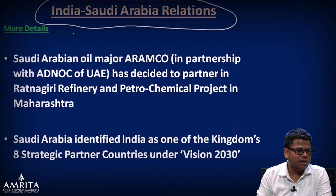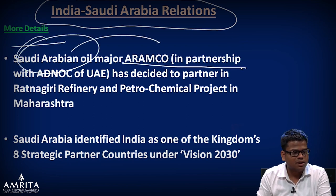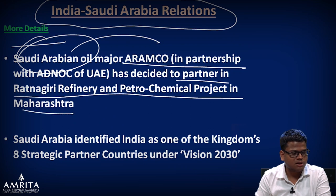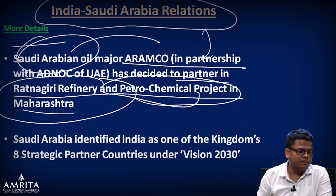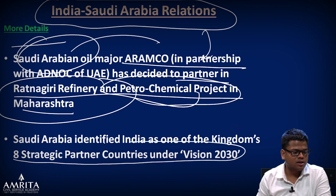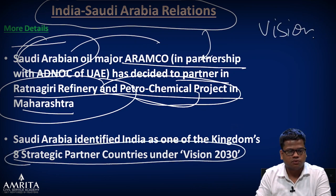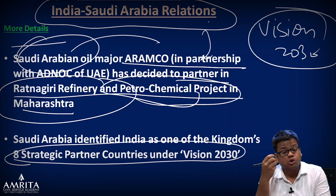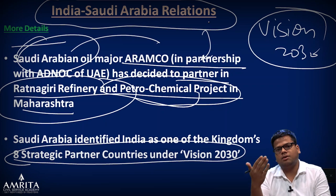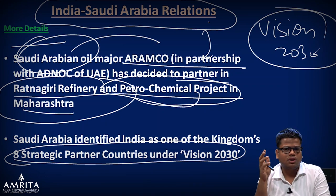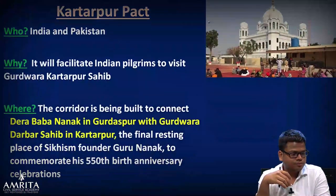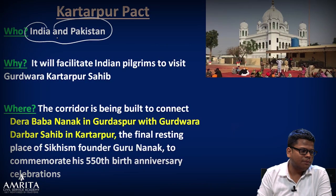Saudi Arabia's Aramco decided to partner in the Ratnagiri Refinery and Petrochemical Project in Maharashtra. Saudi has identified India as one of its eight strategic partner countries under Vision 2030. Vision 2030 also includes modernizing Saudi Arabia — for example, women were recently given permission to drive. The UAE is similarly diversifying — investing heavily in tourism, as seen with Burj Khalifa; UAE has more tourists than India despite being a very small country.